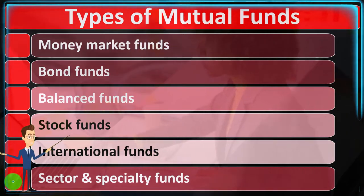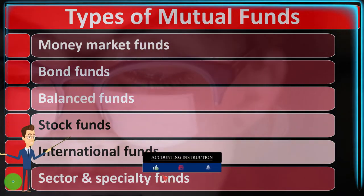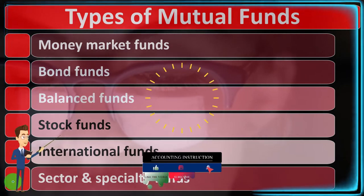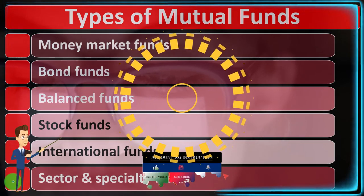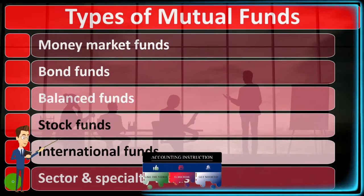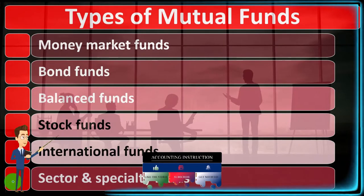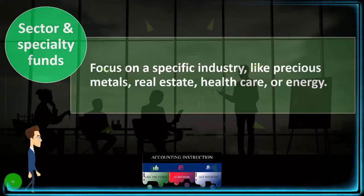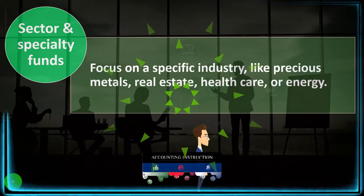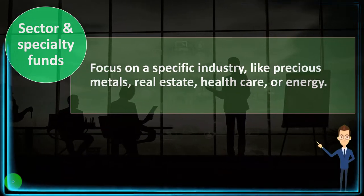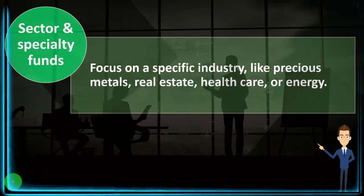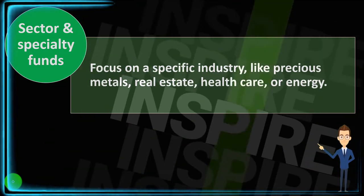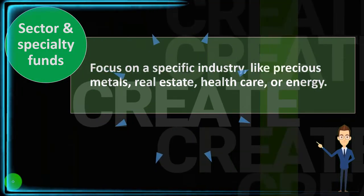Sector and specialty funds focus on a specific industry like precious metals, real estate, healthcare, or energy. When we talked last time about US stock funds, you could break them out by the size of the company — small cap, mid cap, and so on.